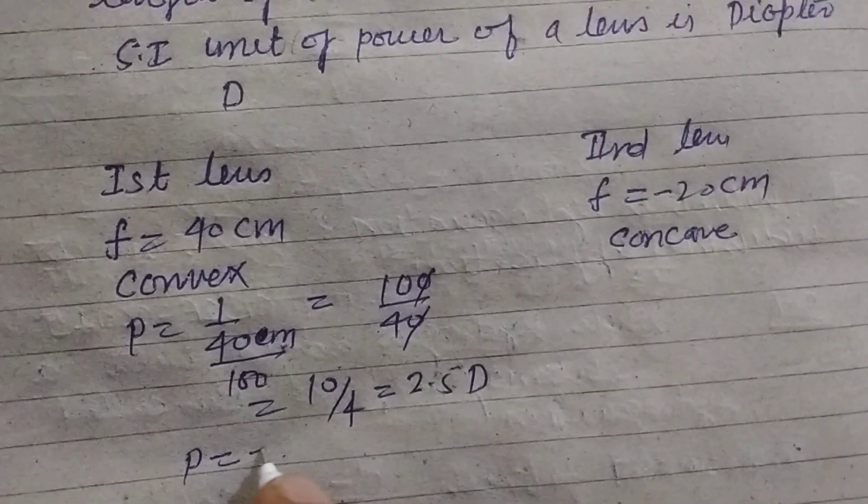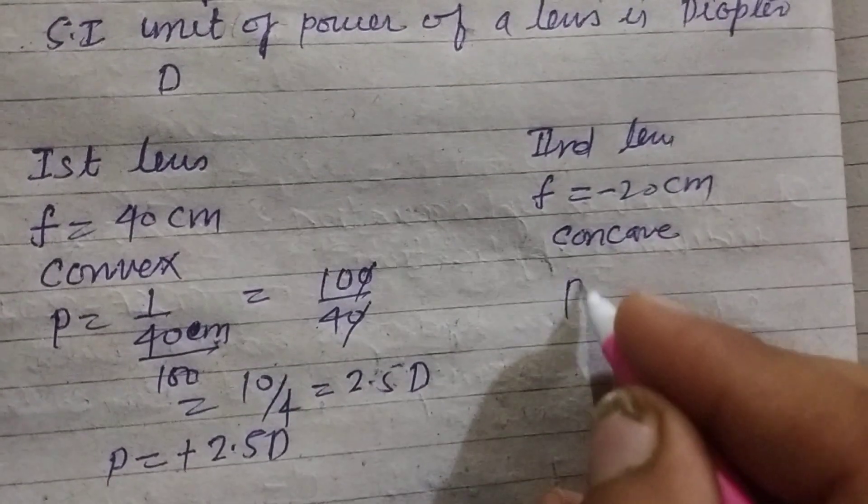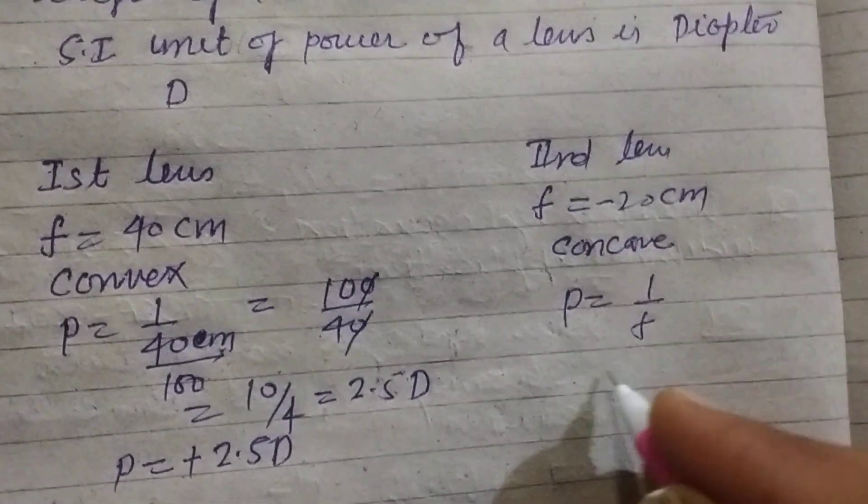So power of this lens is plus 2.5 diopter. Now power of this lens is 1 upon F.